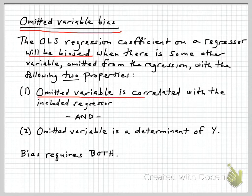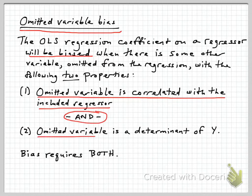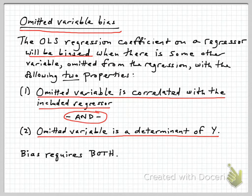First, if that omitted variable is correlated with the included regressor — that's the regressor of interest — and, importantly, the omitted variable is itself a determinant of Y. We will get omitted variable bias if we have variables for which both things are true. This relates to common social science concerns over things like correlation versus causation, so-called lurking variables, or confounding effects. These really are all omitted variable problems.